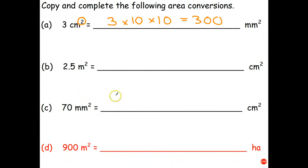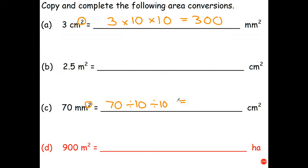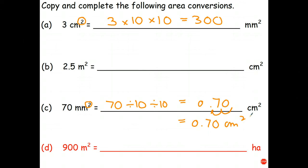What if I was going backwards from square millimeters back to square centimeters? I start with 70. This time I'm going from small units to big units, so I'm going to end up with fewer big units because I'm dividing the same length into larger pieces. There are 10 millimeters in one centimeter, so I need to divide by 10. But because we're working with area, I have to divide by 10 twice. My decimal point moves back two places, and I end up with 0.70 centimeters squared.